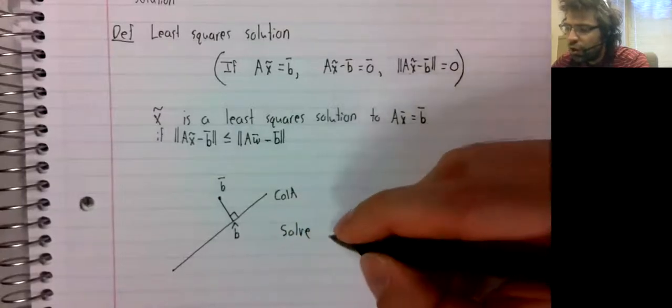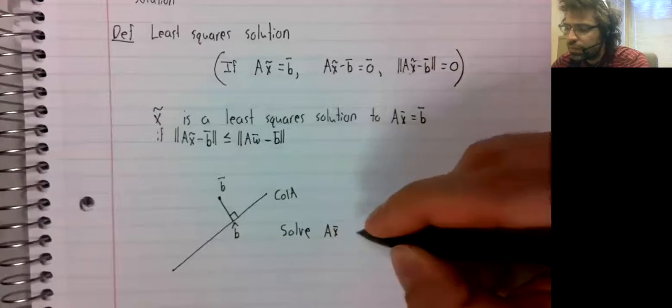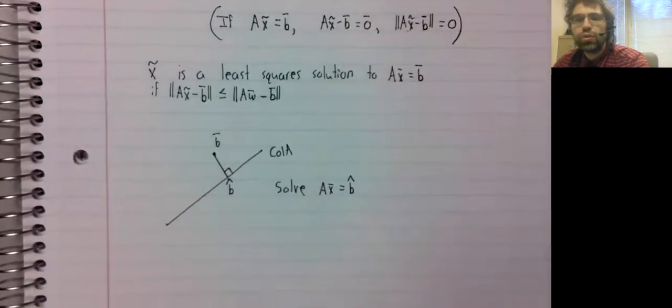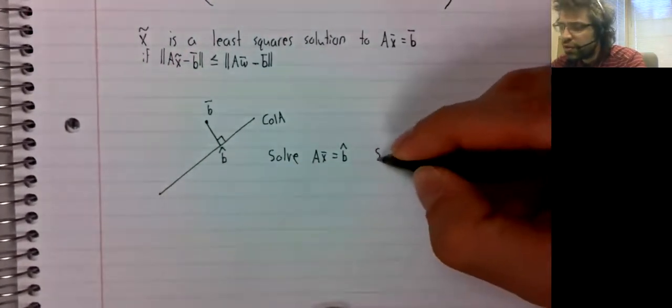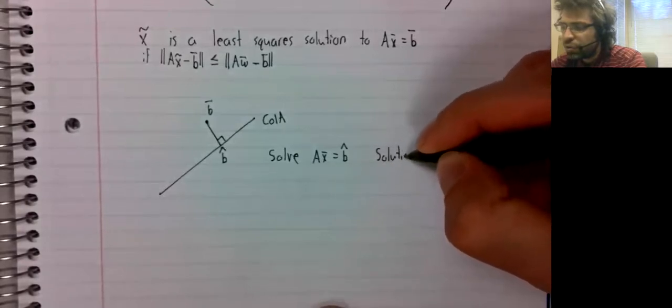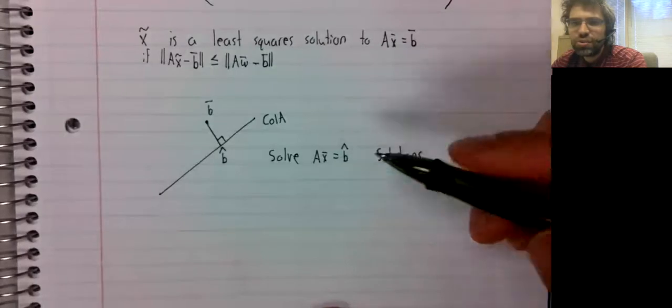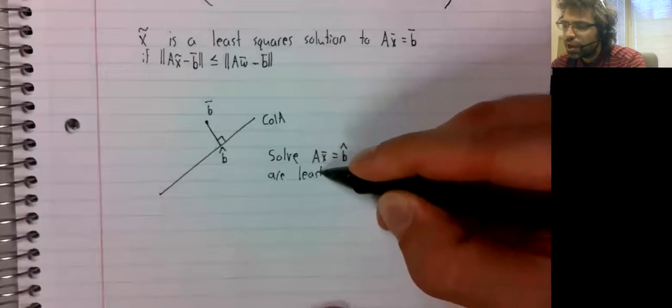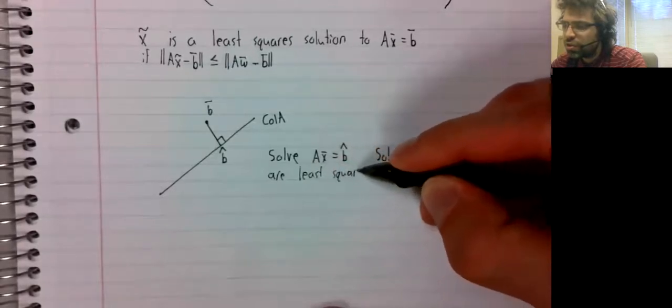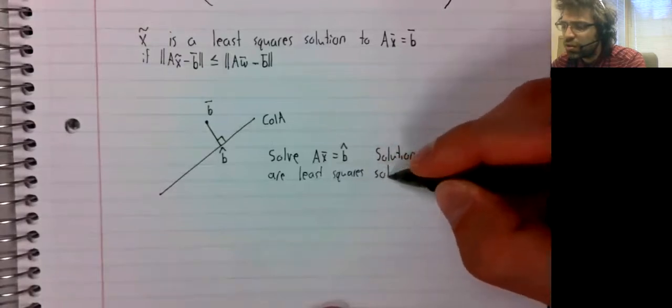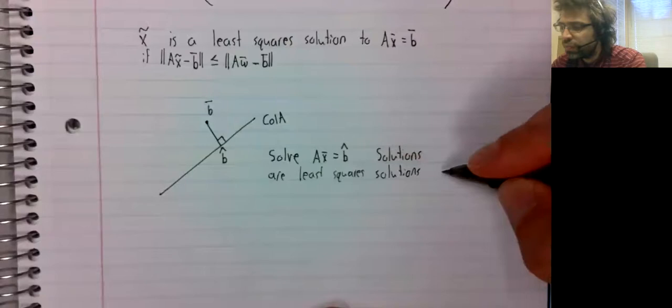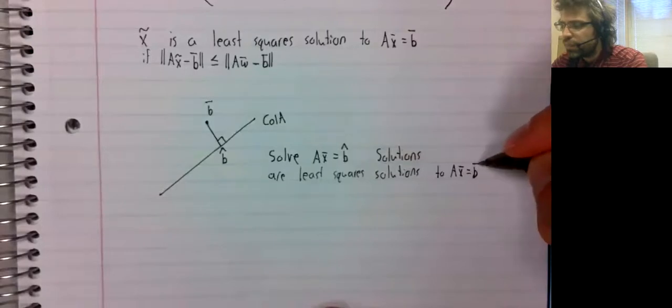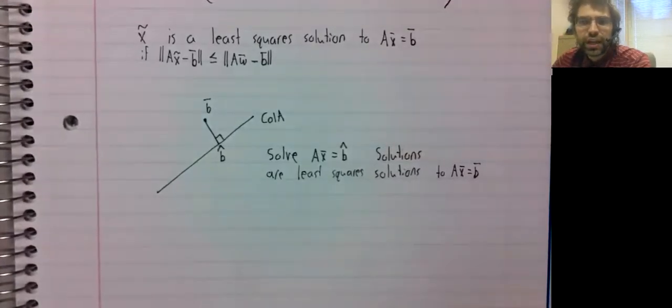Then you solve Ax equals the orthogonal projection, and your solutions to this are our least squares solutions to the equation we are actually looking at.